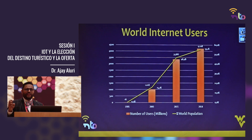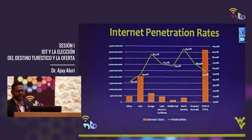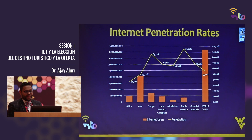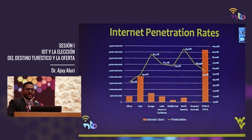If you look at internet penetration rates, it can be confusing. But looking at the data: North America is at 95% of users, Europe second with 85.2%, while Asia and Africa are still below 50%. But across the world you see a huge increase in penetration rates as well.